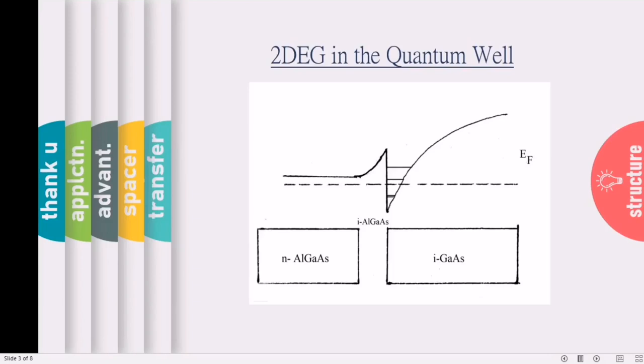And since we are using different band gap materials here, at the interface there will be shift in conduction band, that is delta EC, downwards. So a notch and a well is formed at the interface.